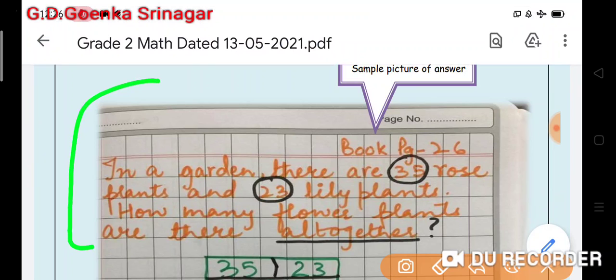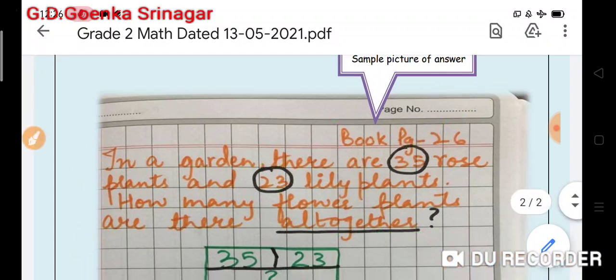In a garden there are 35 rose plants and 23 lily plants. So I have circled 35 and 23. Remember, circle the number and how many flower plants are there all together and underline the clue word.